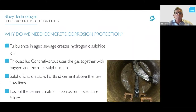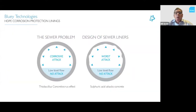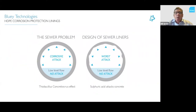This attack happens only above the low water line, because below the water there is no oxygen for the organism to live. The loss of the cement matrix is what they call concrete corrosion, and it can ultimately lead to structural failure. In a sewer where it's been badly protected or not protected at all, you get quite severe concrete corrosion above the low water level. Typically, concrete pipes are only protected down to about 300 to 350 degrees of the pipe circumference, since the invert is below the low water level and doesn't suffer from the attack.